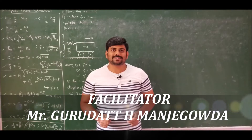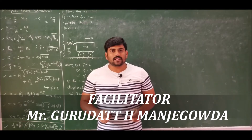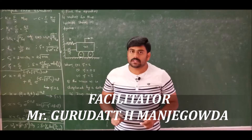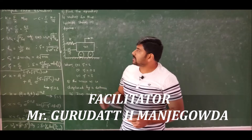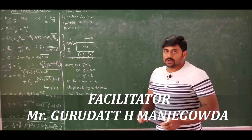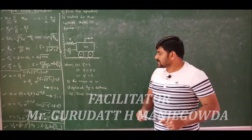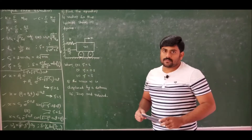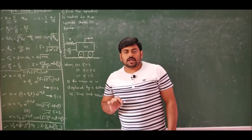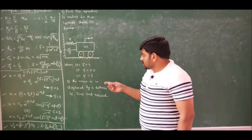Welcome, dear learners, to this course on mechanical vibrations. In module 1, we have been discussing free undamped and damped vibrations analysis. So far, we have solved two numerical problems on damped vibration analysis. Problem number 3 states: find the equation of motion for the system shown in the figure, when zeta equals 1, when zeta equals 0.3, and when zeta equals 2. The mass is displaced by 3 cm and released. We need to determine the system response — an equation for displacement x as a function of time for these three cases. Let us solve this problem.